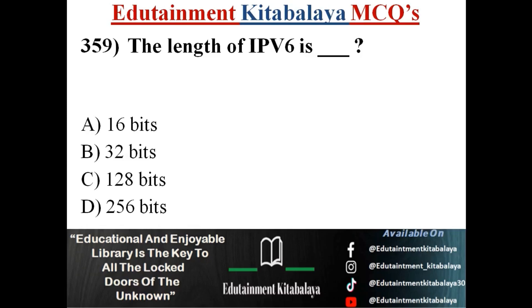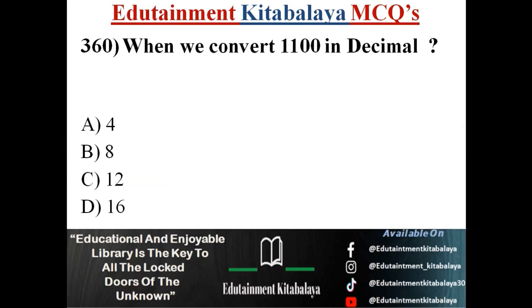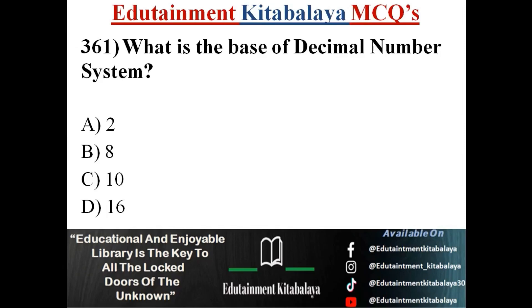When we convert binary 1100 to decimal: a) 4, b) 8, c) 12, d) 16. Correct answer is c) 12.